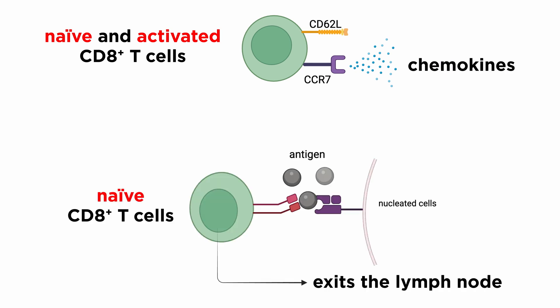At this location, naive T-cells interact with antigen-presenting cells. In case a naive CD8 T-cell does not encounter its specific antigen, it leaves the lymph node.